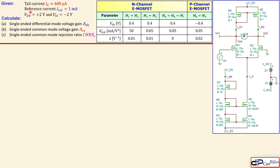VDD and VSS are also given. We have three questions: the single-ended differential mode voltage gain, the single-ended common mode voltage gain, and the single-ended common mode rejection ratio based on those two results. Let's look at the solutions, starting with the calculations.